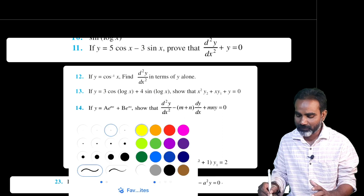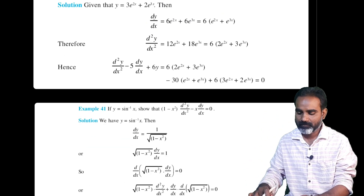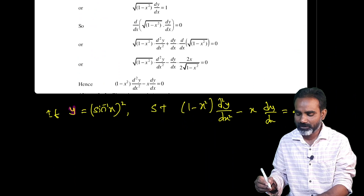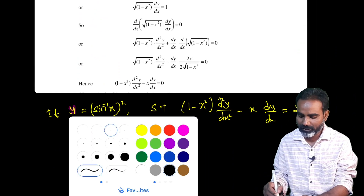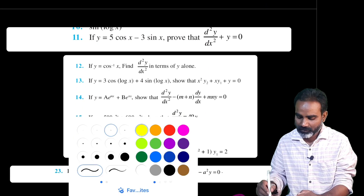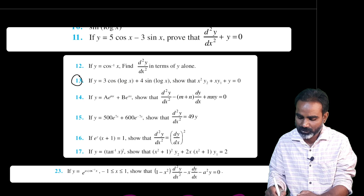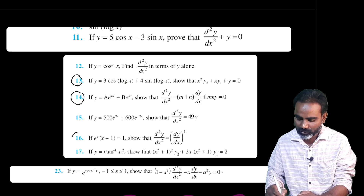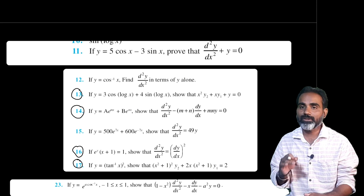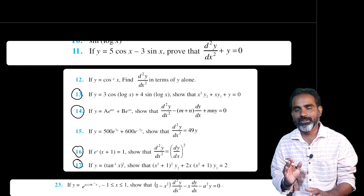All the problems are quite the main problems. You can expect sine inverse of x whole square here — that's easier. Similarly, you can expect this problem. Question number 13 is very important. Question number 14 is also very important. Question numbers 16 and 17 are the most important. We have 7 questions in total, and some are not important.